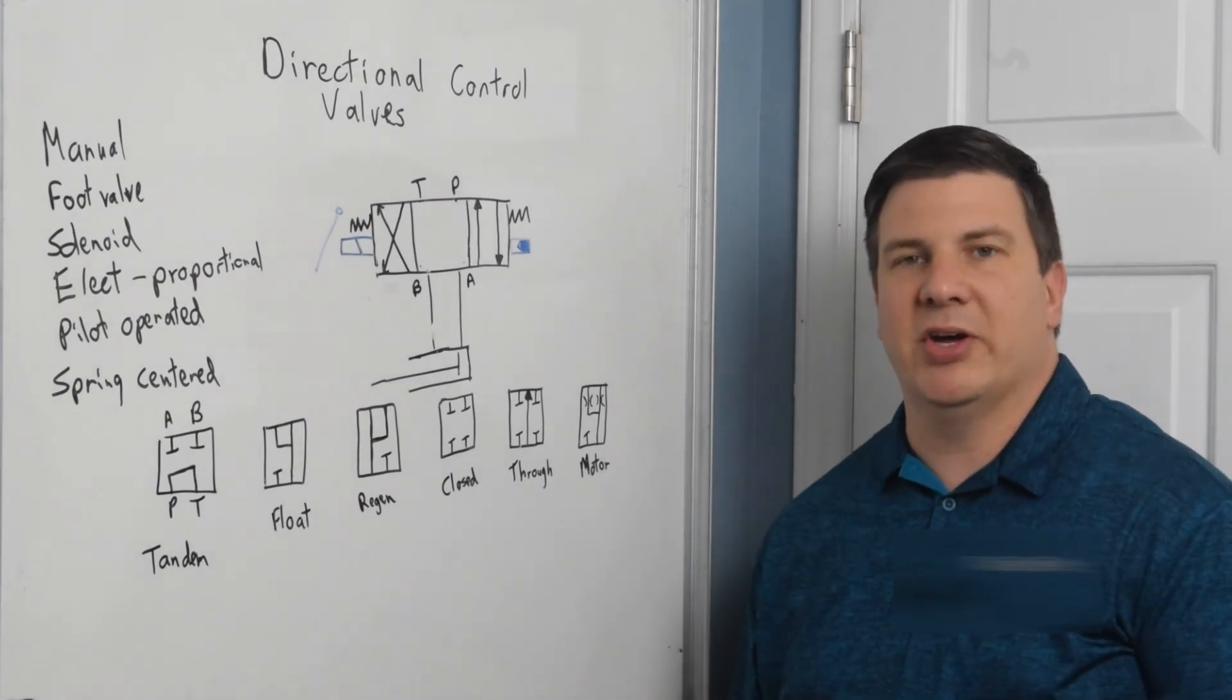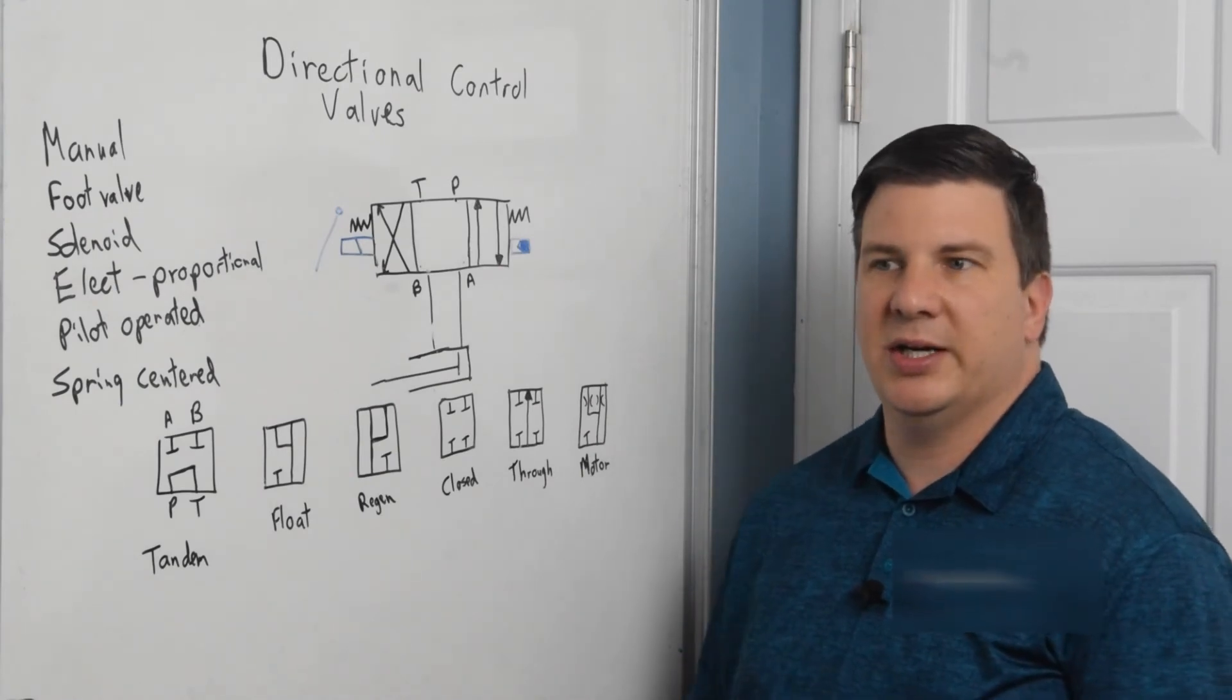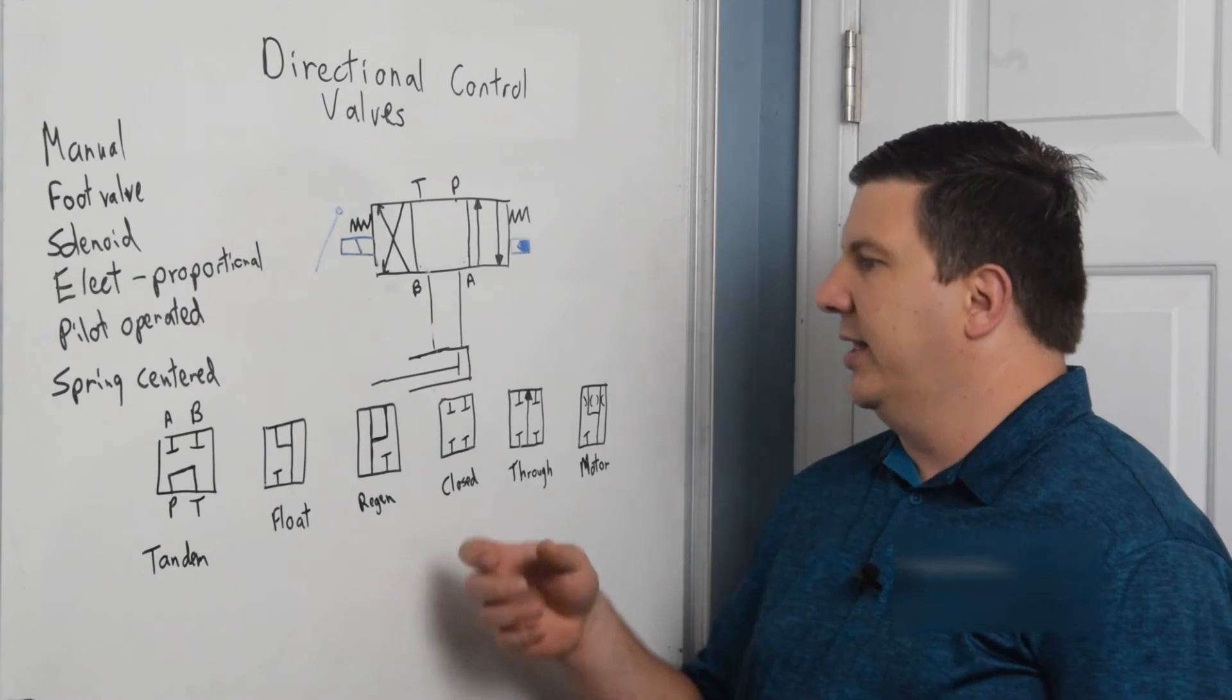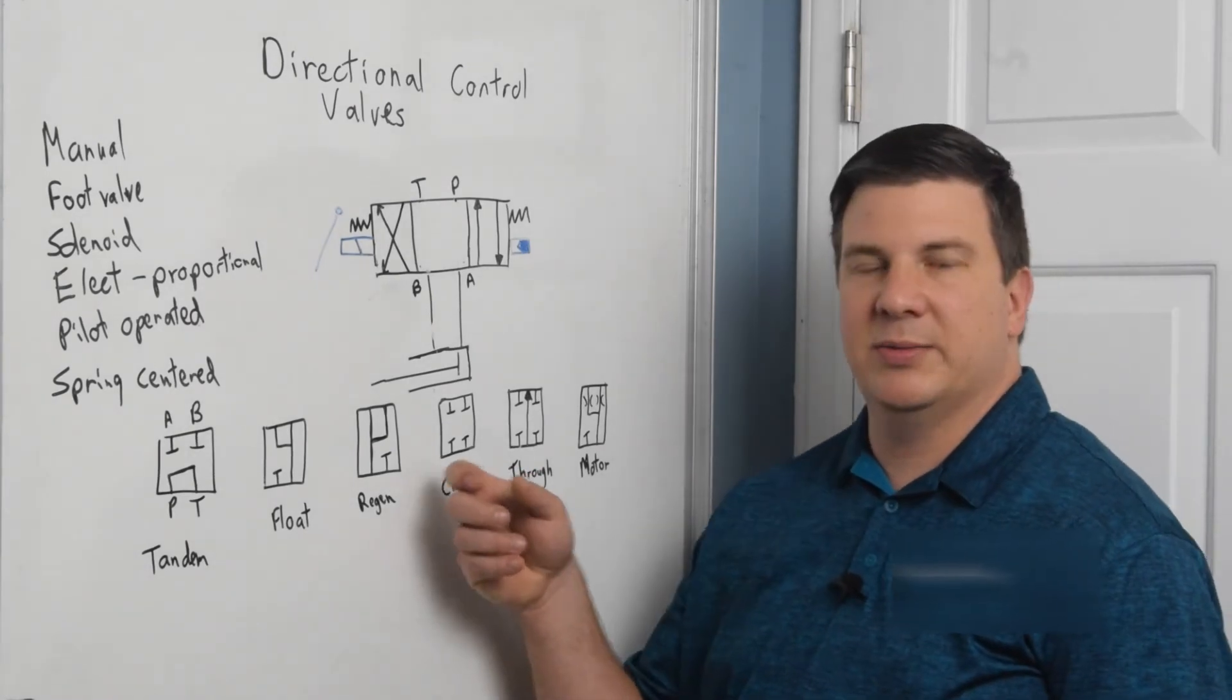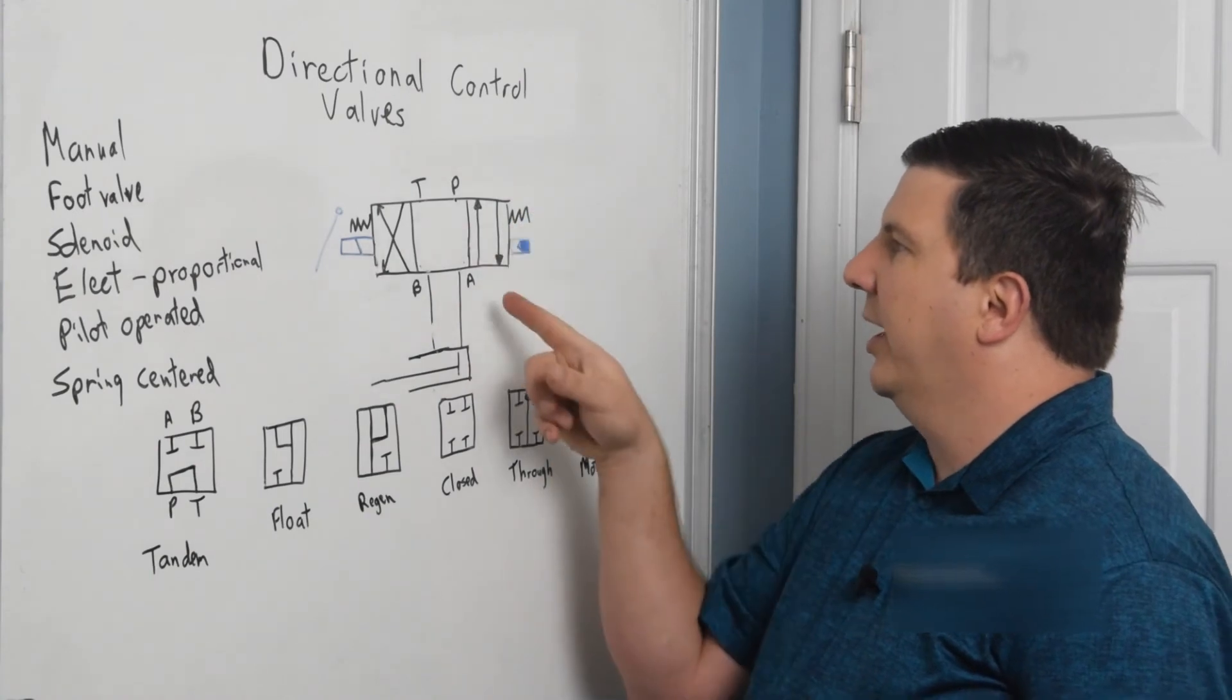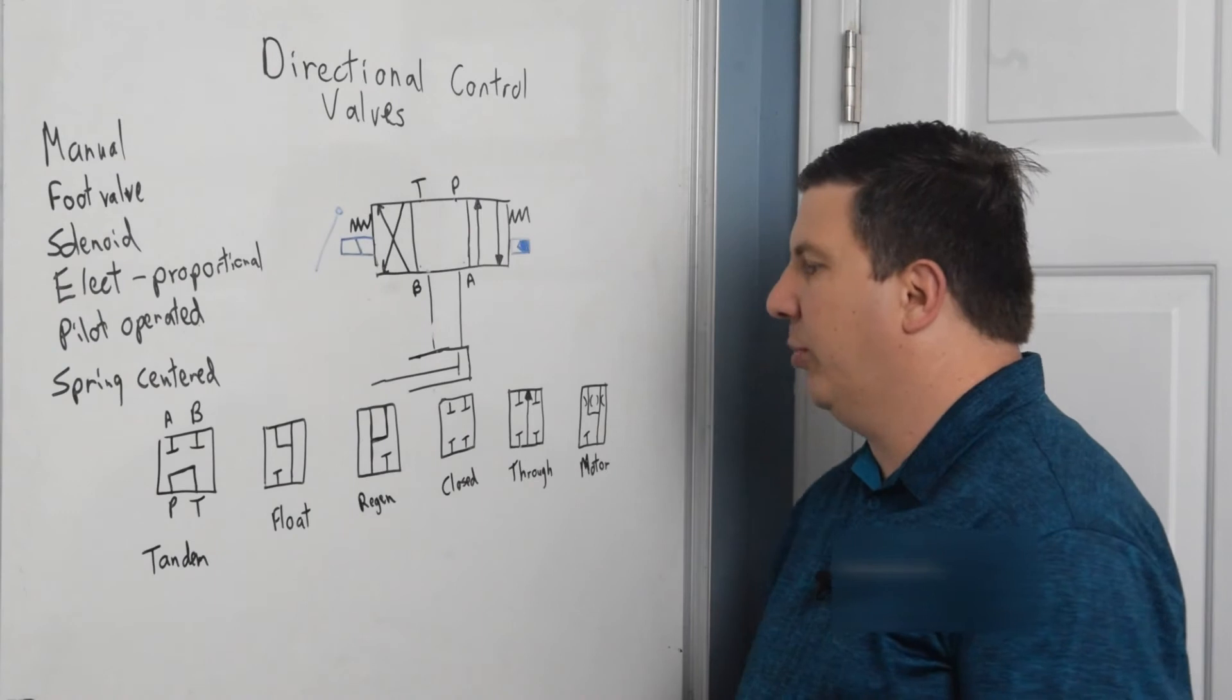There's a lot of other ways to do this, but a regen center is one of those ways to do it. It's great if you need something to go out quickly. And then if you wanted, if you ran into pressure issues, you can go ahead and shift your spool so that your B is now going to tank rather than going to the A port.